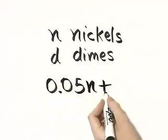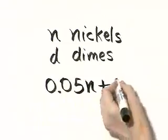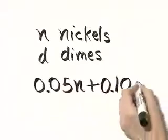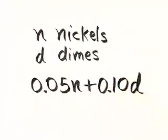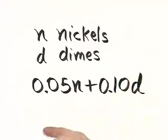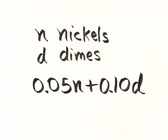And then the value in dimes I would add to that. Here would be the value of a dime, and I'd multiply it by the number of dimes. So this expression gives the value of the money if you have n nickels and d dimes.